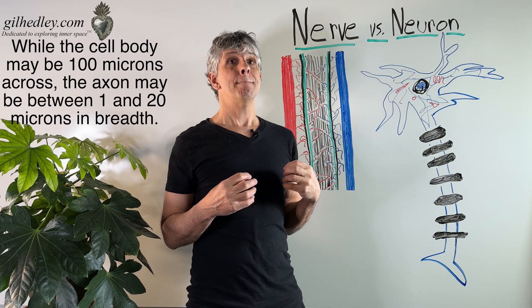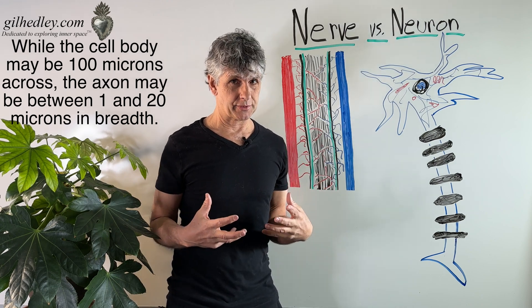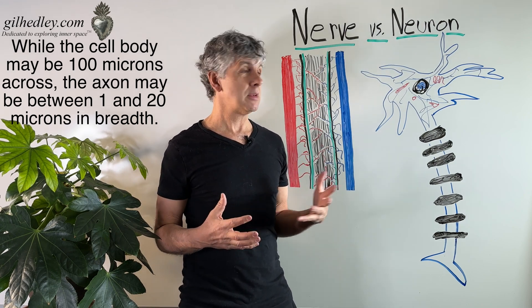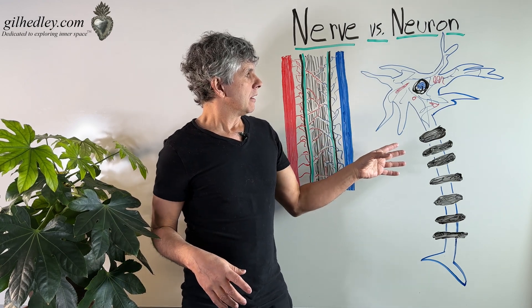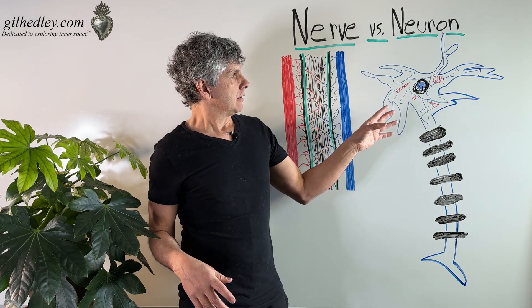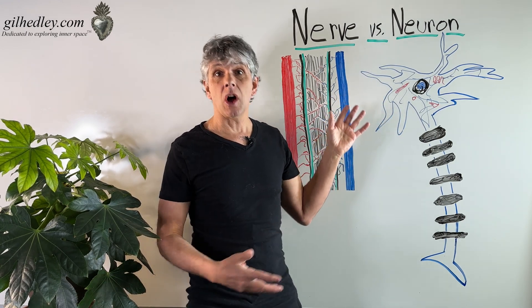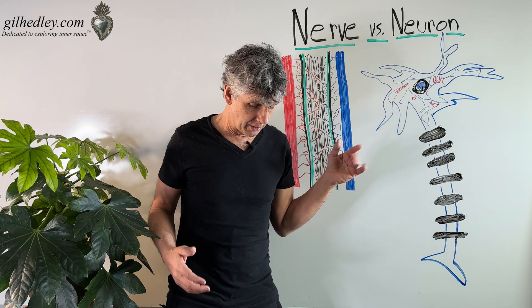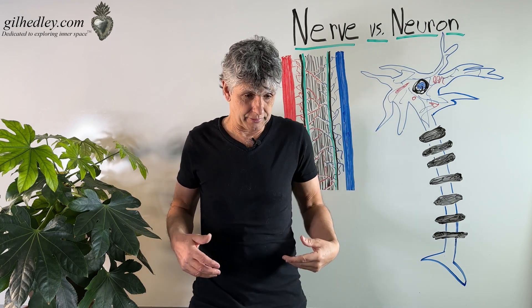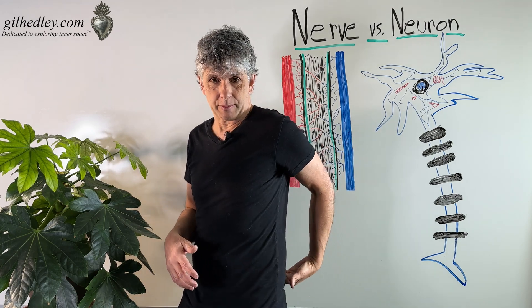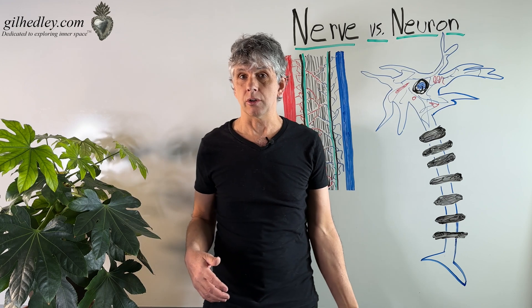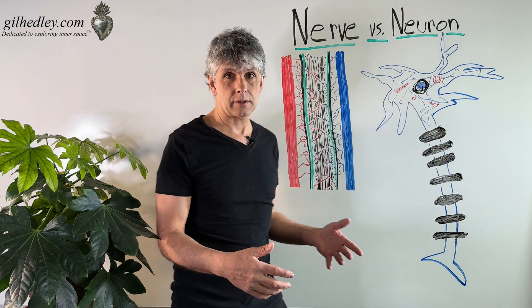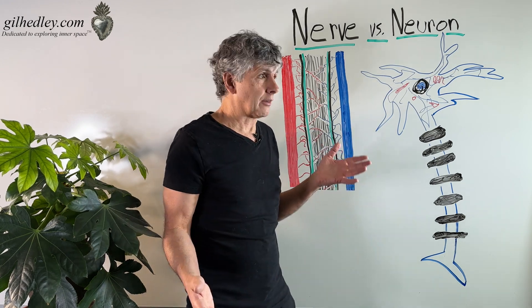We're talking millionths of a meter. So you can't even see that. And yet they can be very long. So a nerve cell can be basically from your sacrum all the way down to your toes. So that can be a couple feet, several feet.